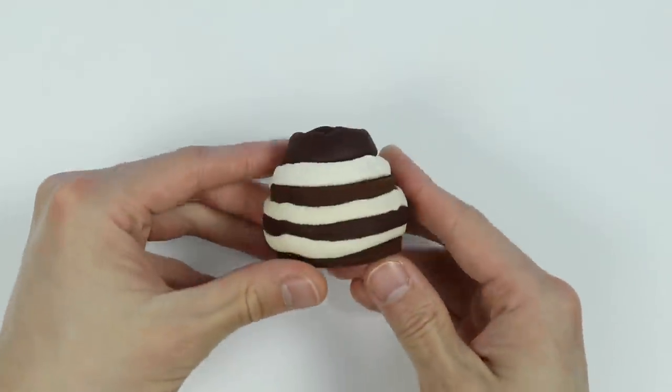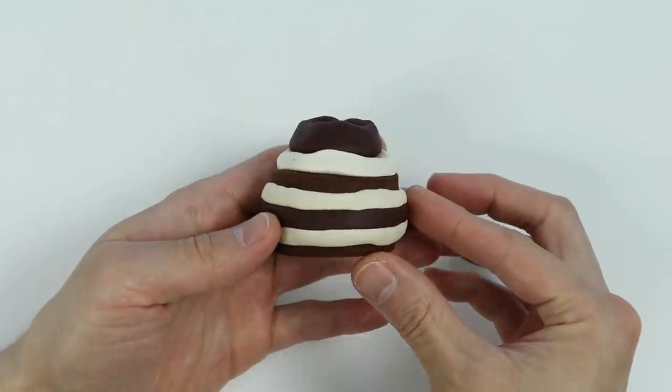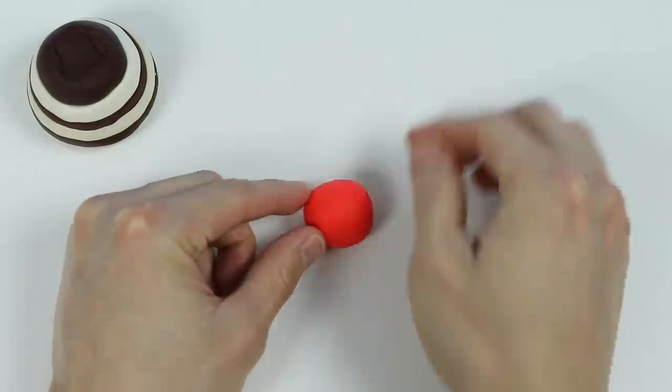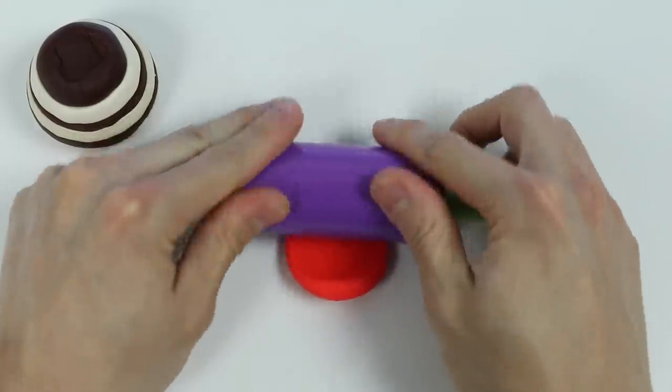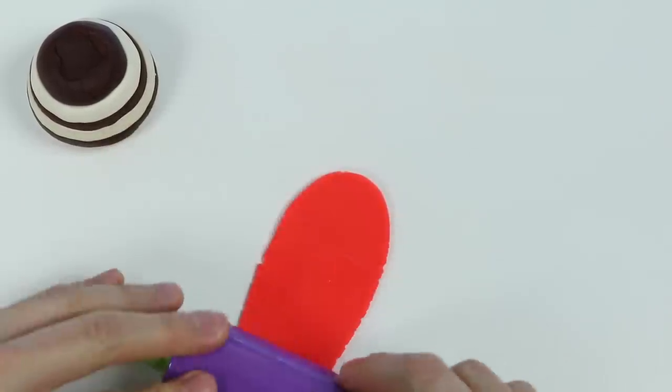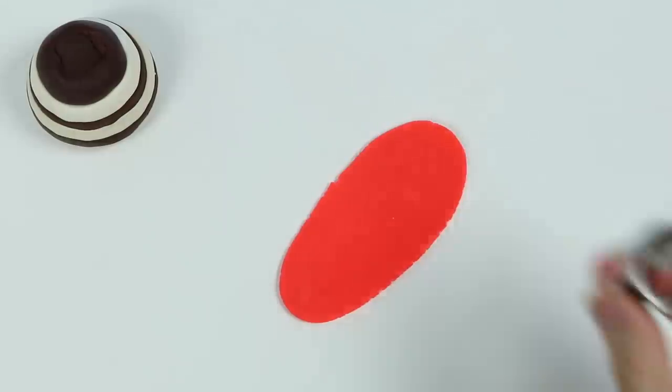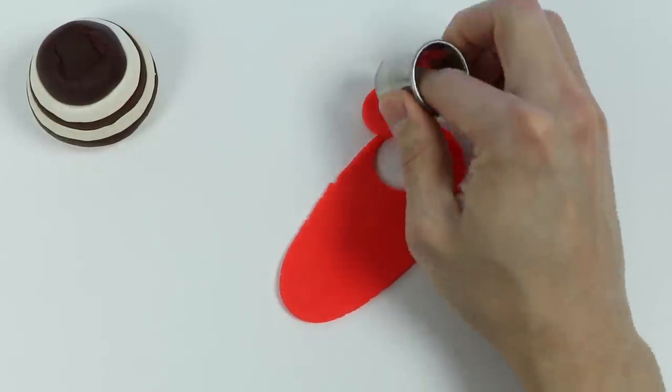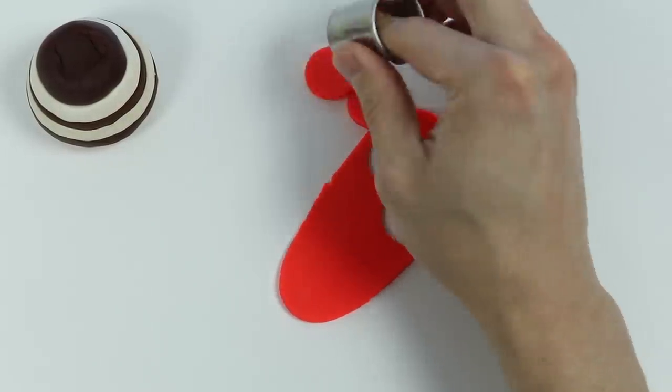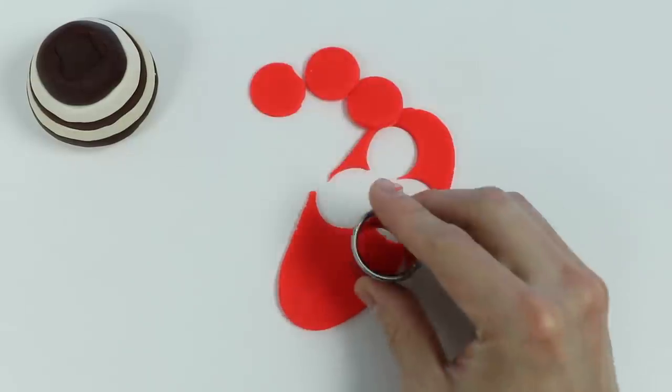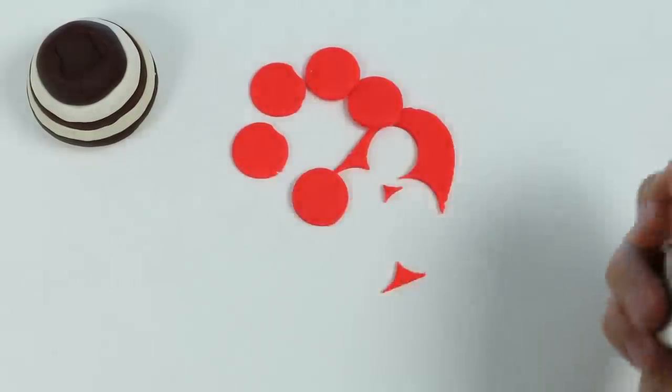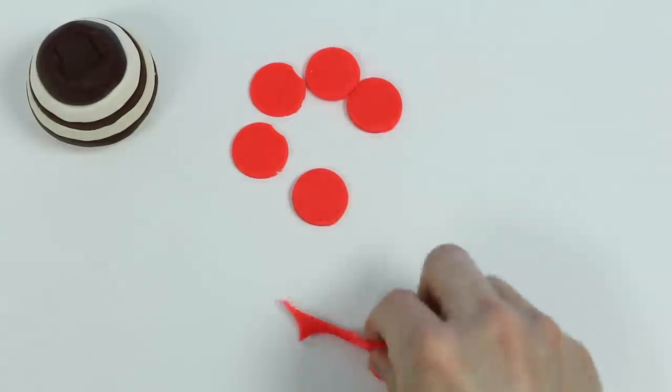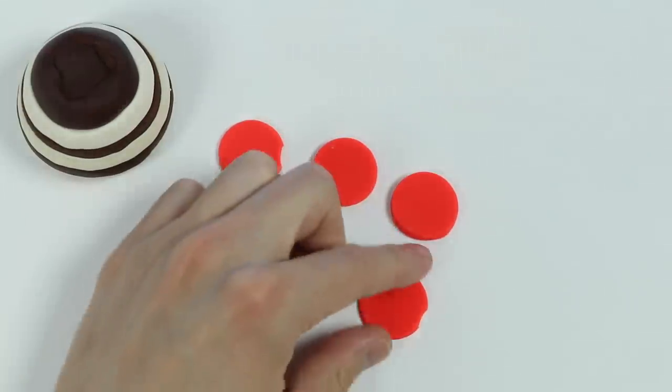Now that our cake is complete, let's add our rainbow rose decorations. Start by rolling out some red Play-Doh. Now let's make the rose petals. Awesome, we have five rose petals. Now let's make our red rose.